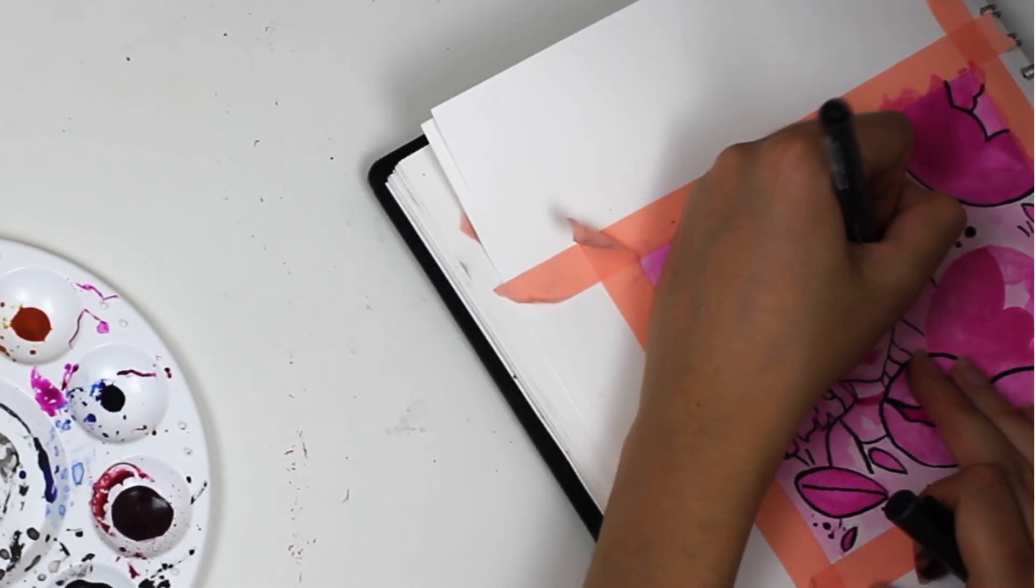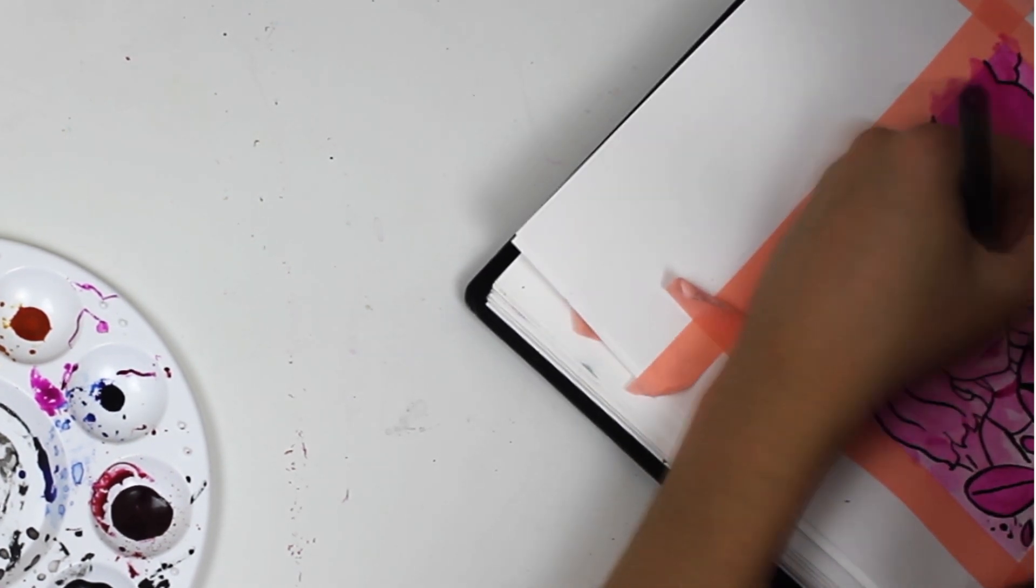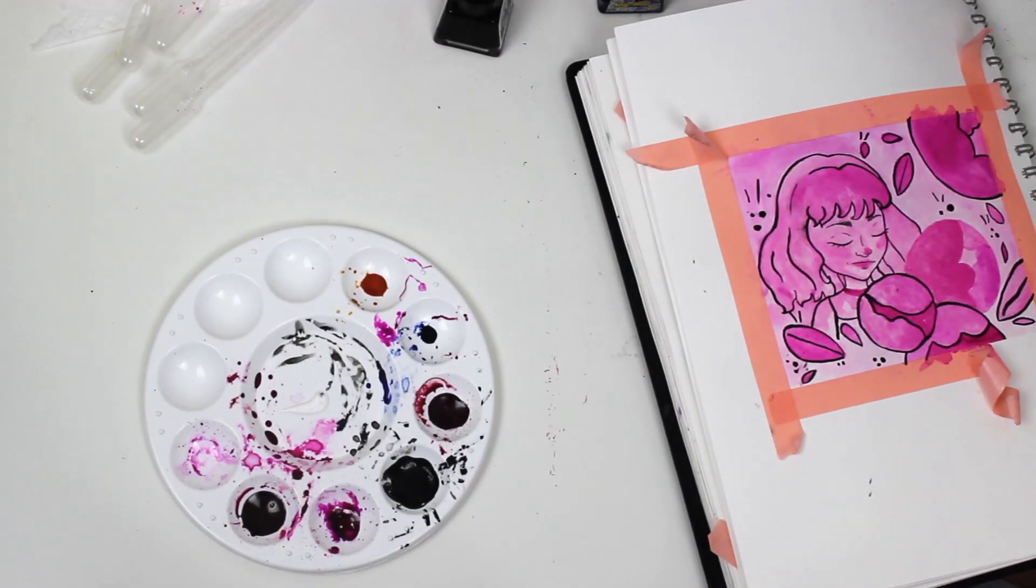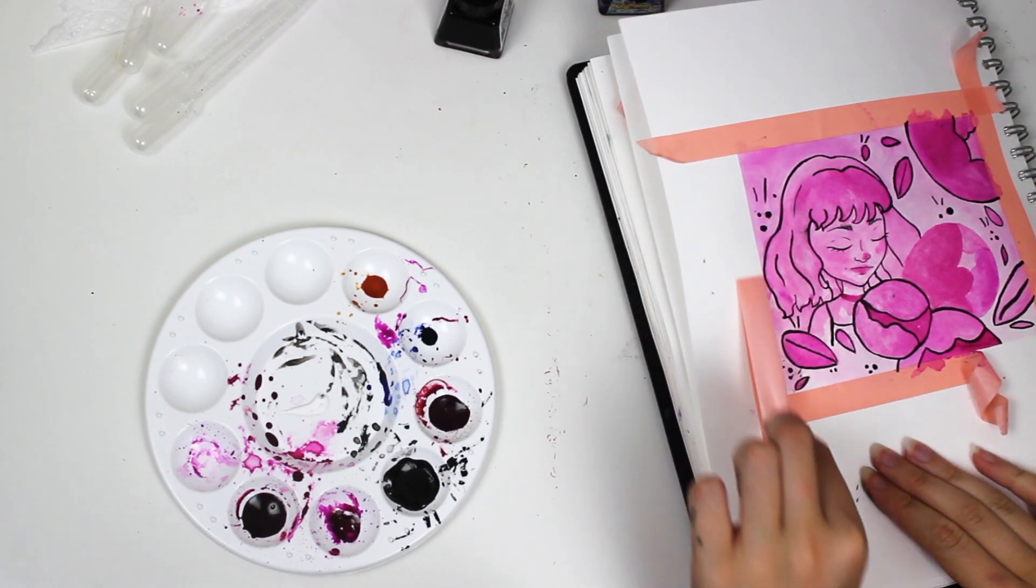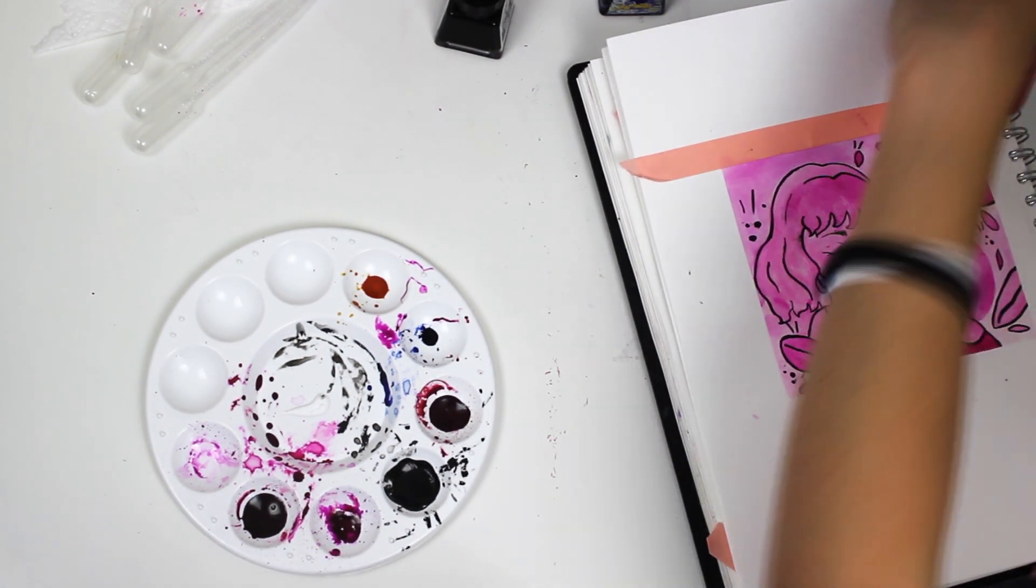I did cheat and use a fine liner pencil to go over her eyes and her nose, but that was just because I do find it quite hard at the moment, as I'm not practiced well enough with ink to be able to do a good job of doing really small details like that.